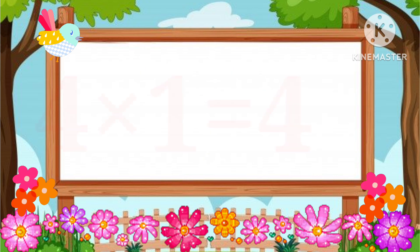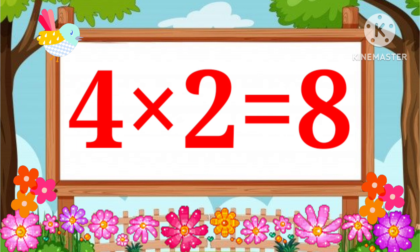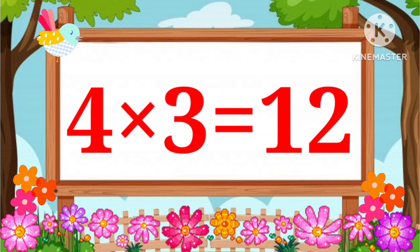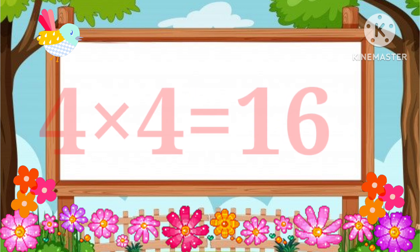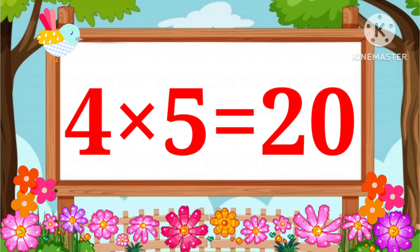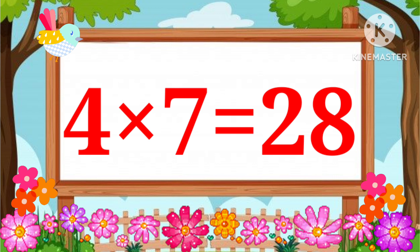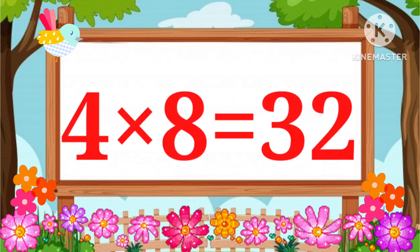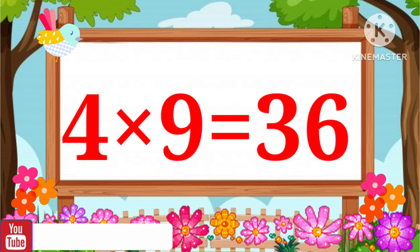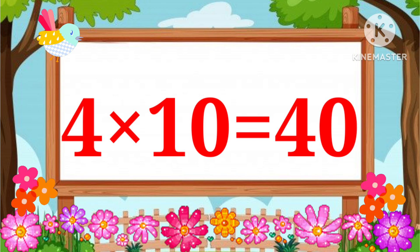Table of 4. 4 one's a 4, 4 two's a 8, 4 three's a 12, 4 four's a 16, 4 five's a 20, 4 six's a 24, 4 seven's a 28, 4 eight's a 32, 4 nine's a 36, 4 ten's a 40.